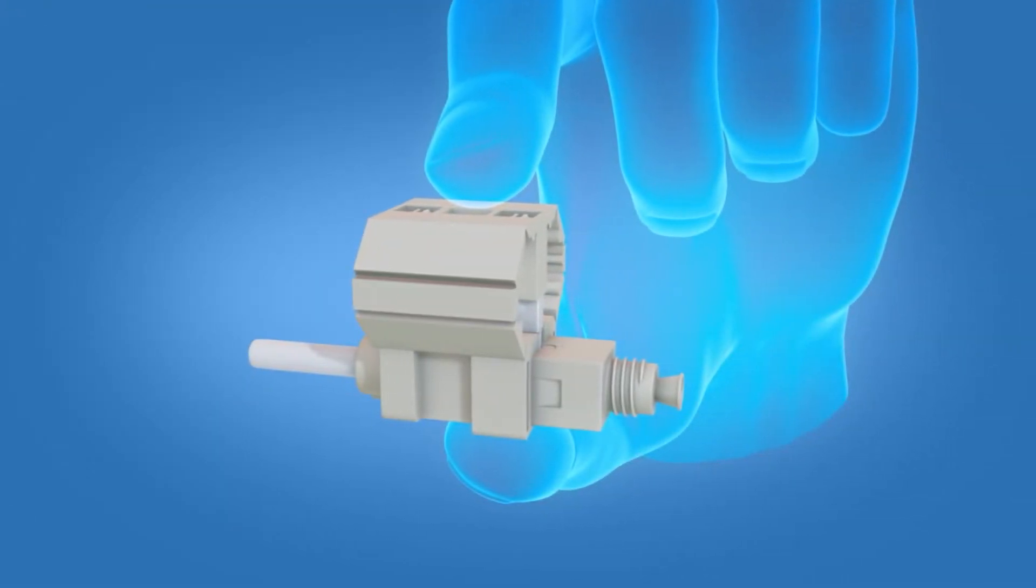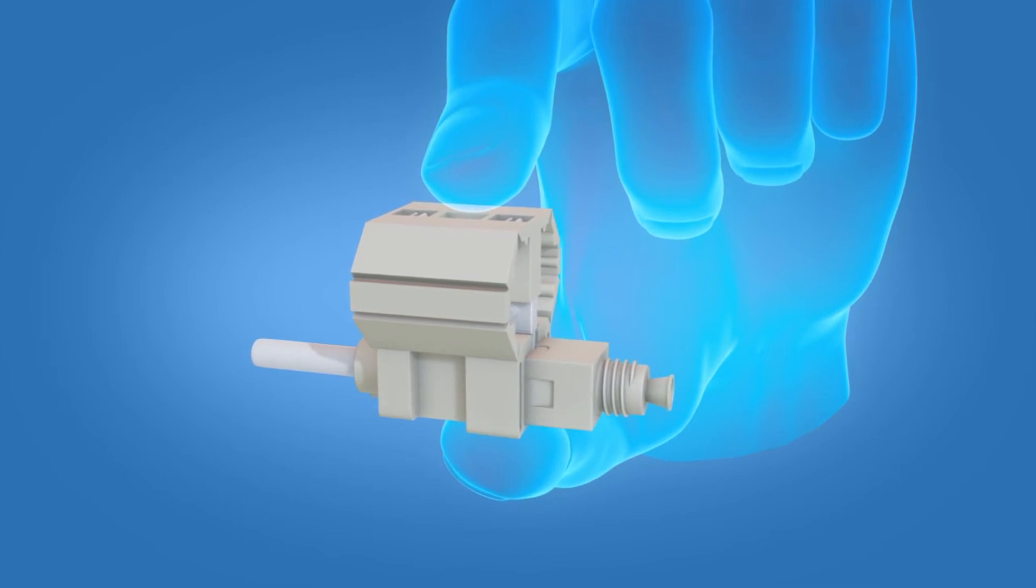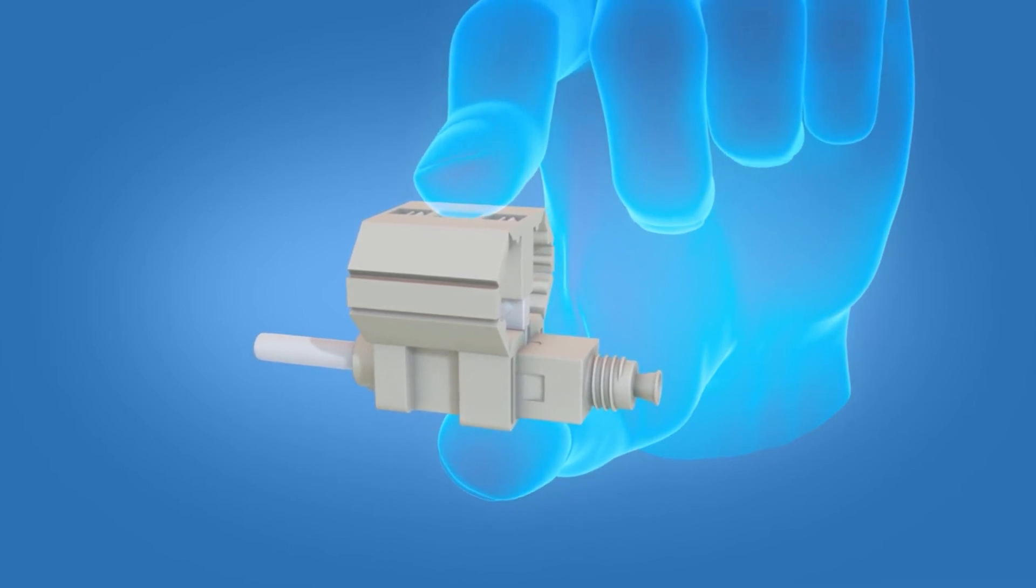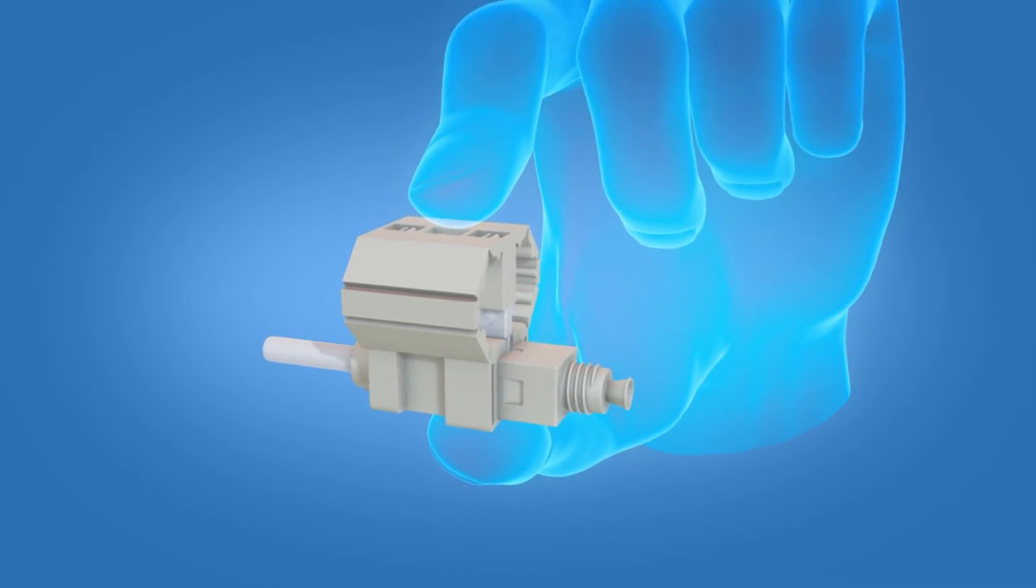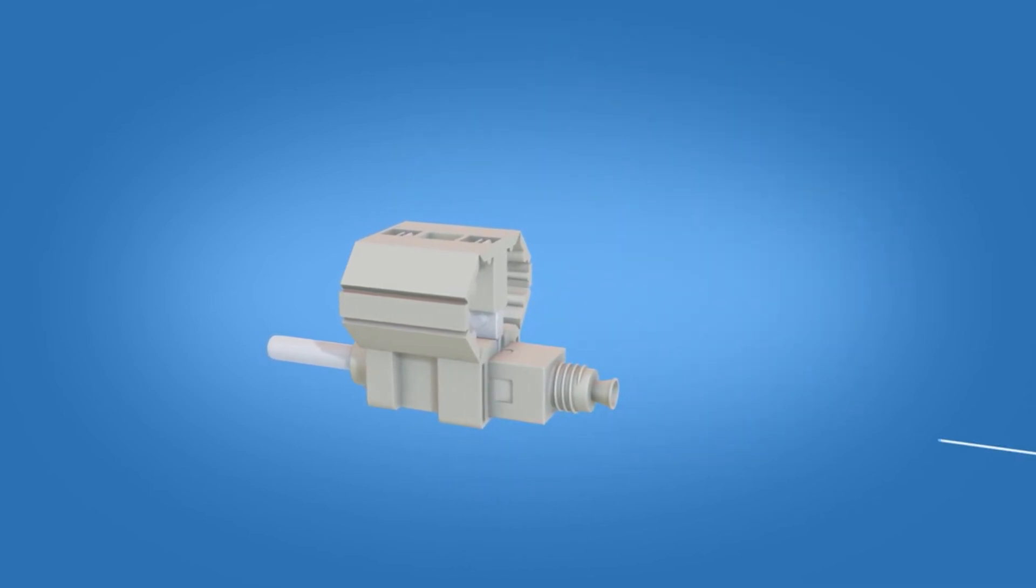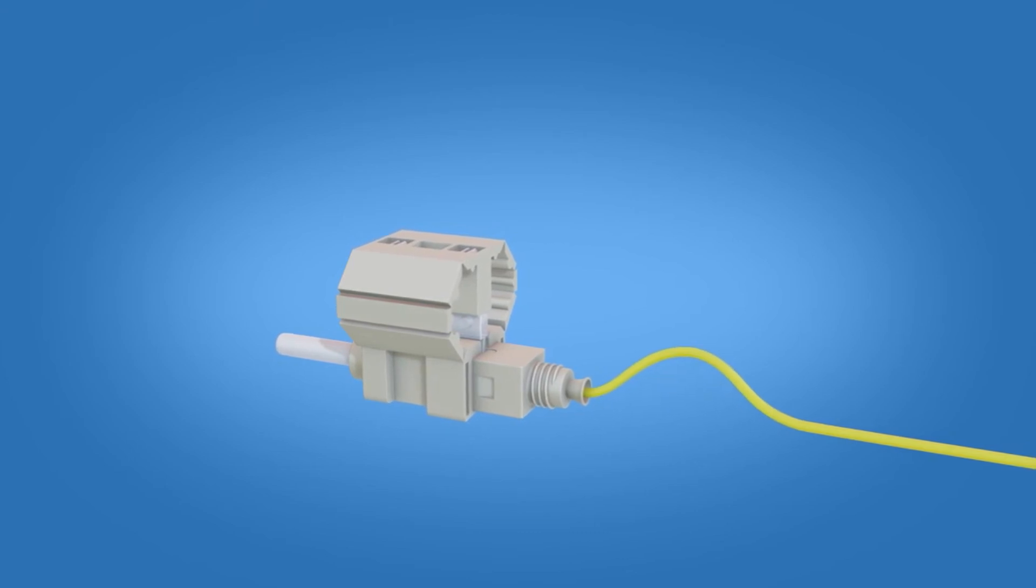Next, take the FastST connector and squeeze the top and bottom of the wedge to ensure that it is engaged. Insert the fiber into the connector. Create a slight bend to maintain contact.